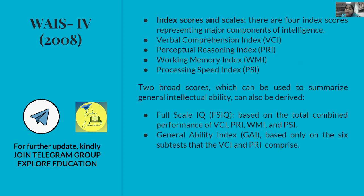The four index scores in WAIS-4 represent the major components of intelligence: Verbal Comprehension Index (VCI), Perceptual Reasoning Index (PRI), Working Memory Index (WMI), and Processing Speed Index (PSI). From WAIS-4, two broad scores can be derived: the Full Scale IQ (FSIQ), which includes VCI + PRI + WMI + PSI, and the GAI, which includes only VCI and PRI.